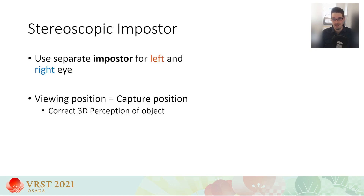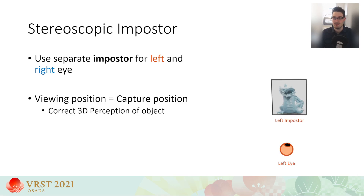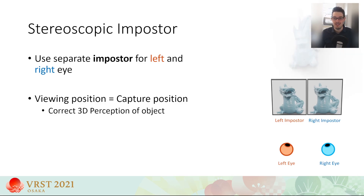To create a three-dimensional perception, an impostor has to replicate the binocular disparity between the left and right images of the substituted object. We achieve this by displaying a separate impostor for each eye. We call this image pair a stereoscopic impostor. Viewing such an impostor pair from the same position as it was created results in a correct three-dimensional perception of the original object.